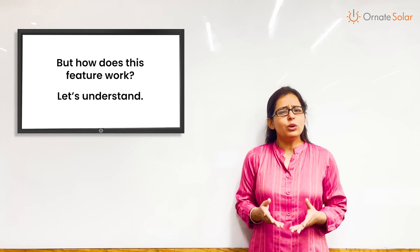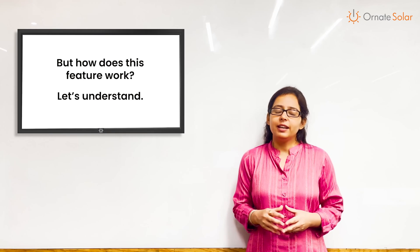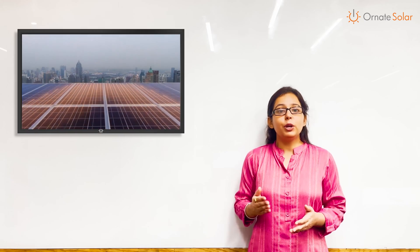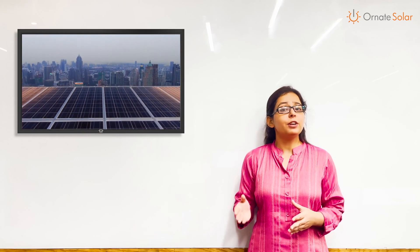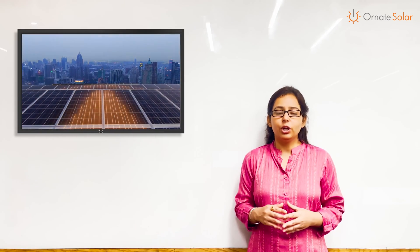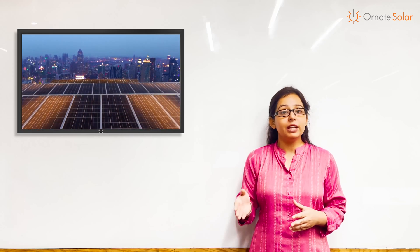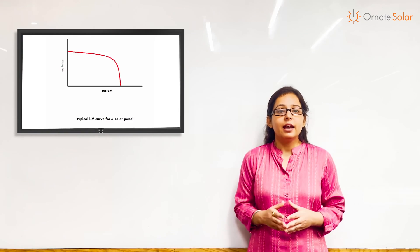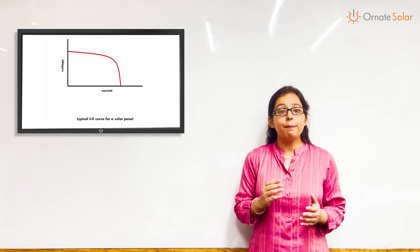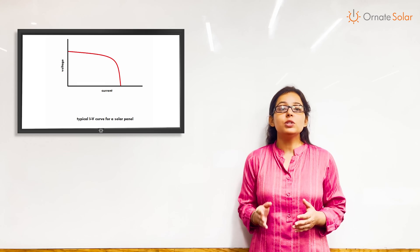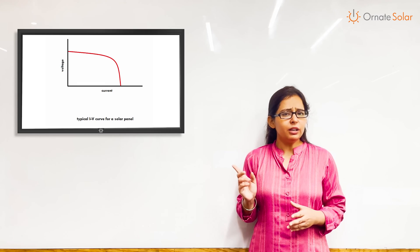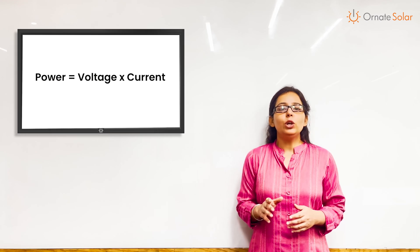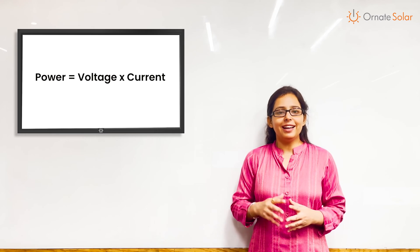But how does this feature work? Let's understand. Each solar panel produces a different voltage in different situations, due to the amount of light available and the temperature of the panel. And at every voltage level, the panel will produce a current.